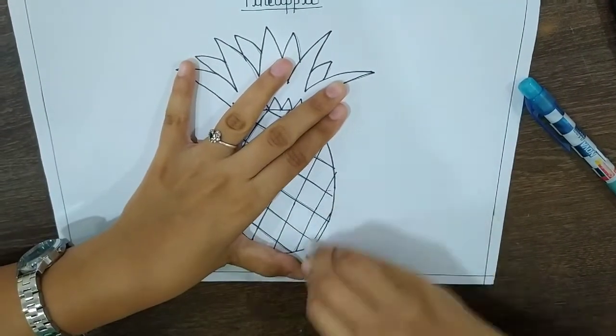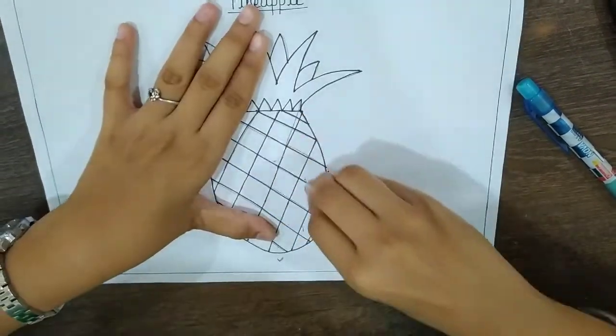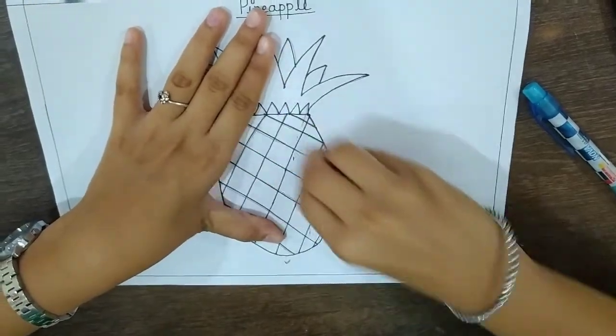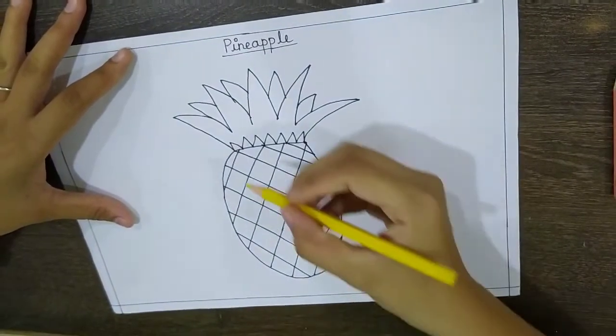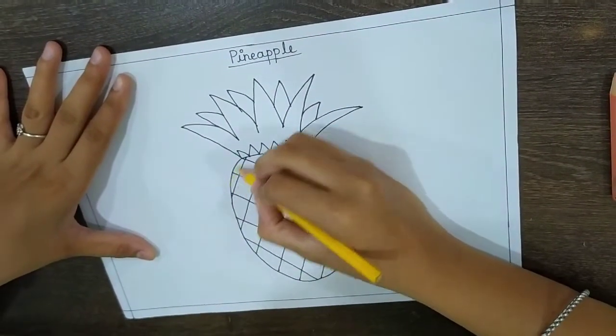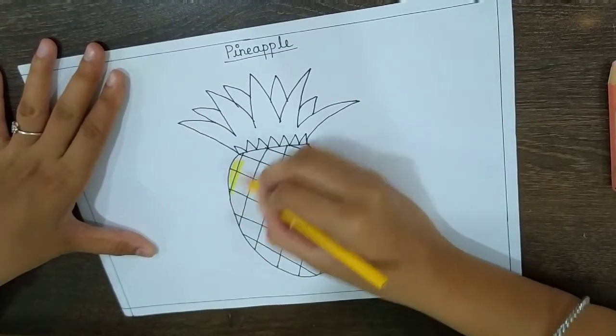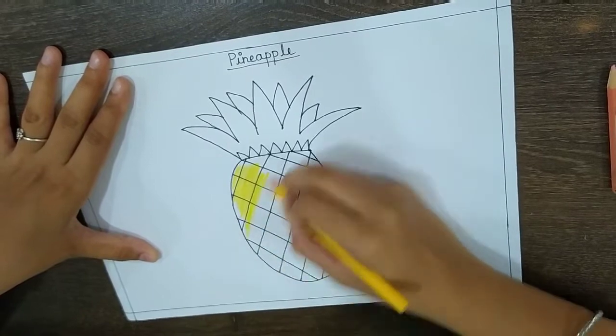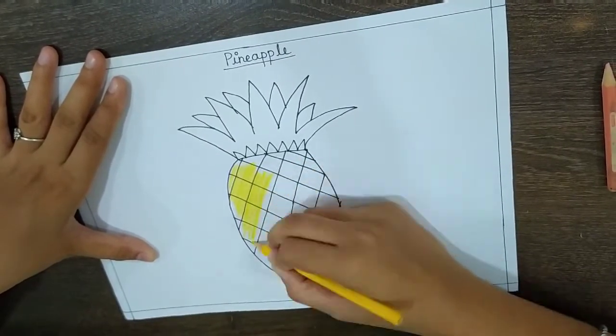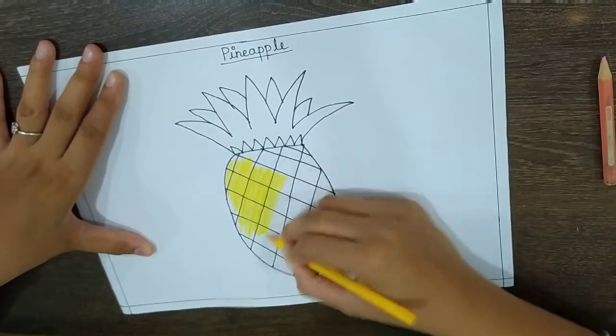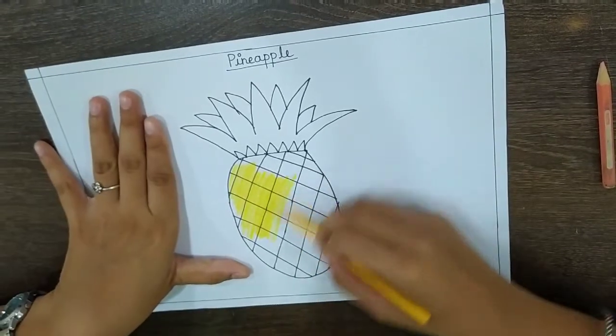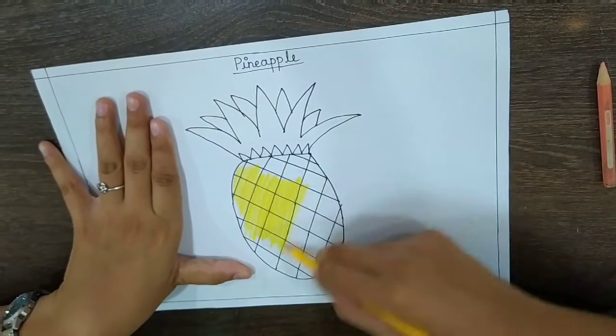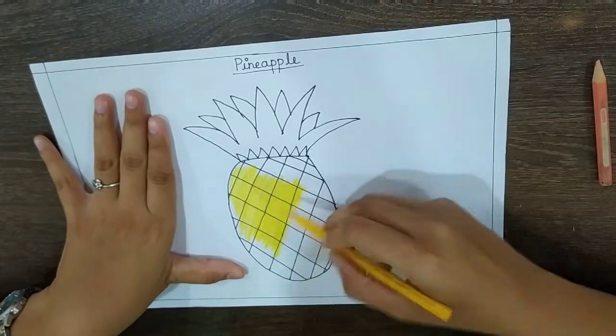So, it should look nice. Now I am taking yellow color and I am going to color the pineapple. This way. Color it in a slanting way. So, this is yellow color, correct? Okay.